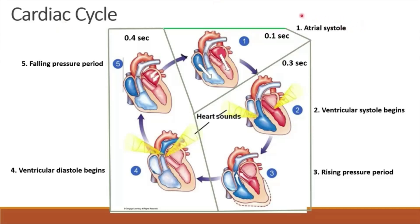The first phase of the cardiac cycle is atrial systole, which takes about 0.1 second. This is to ensure that the remaining blood in the atria enters the ventricles. During this period the atria contract and blood is pushed into the ventricles. The pulmonary semilunar valves and aortic semilunar valves are closed.